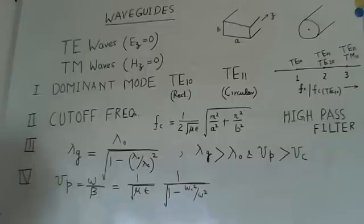These waveguides support TE waves or TM waves. That means, if it is transverse electric wave, that means electric field is transverse to the direction of propagation. That means, Ez is zero for TE waves.